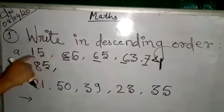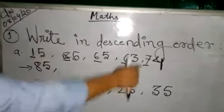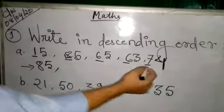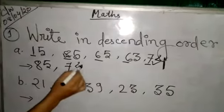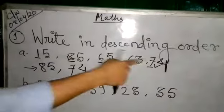Now, next. 1, 6, 6, 7. Which is bigger? Of course, this is bigger. 7 is bigger. So, 74. We have written these two numbers.